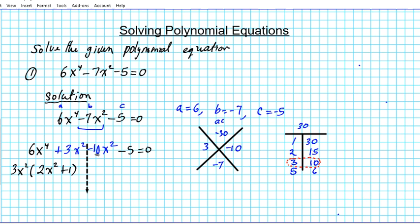And then the next two terms, -10x^2 and -5, the GCF is -5. You always bring down the middle sign, -5. When we factor out -5 from -10x^2, you have 2x^2, and when we factor out -5 from -5, you get +1 = 0.